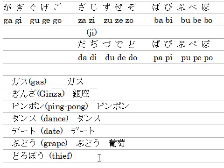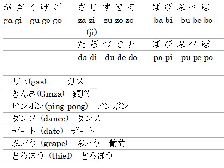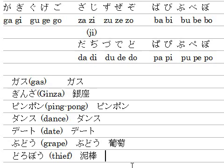The last example word is DOROBOU, meaning 'thief'. Type D-O-R-O-B-O-U, then hit the space key — it converts to the kanji for thief. DOROBOU also has a long vowel at the end (B-O-U). We say DOROBO for thief.